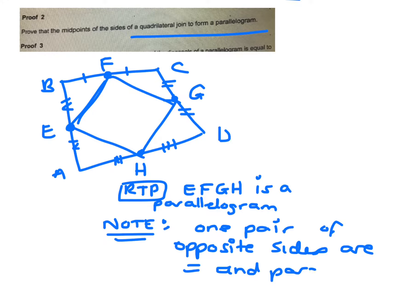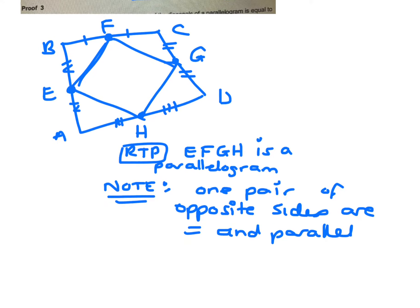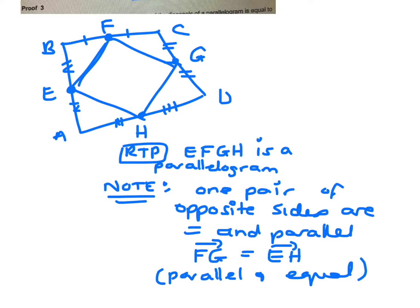To prove something is a parallelogram, all that's required is to prove that one pair of opposite sides are equal and parallel — that's the easiest way. With vectors you can just prove that vector FG is the same as vector EH, because that means they are parallel and equal, which gives a parallelogram.